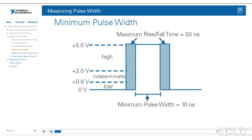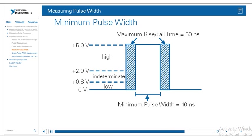When measuring pulse width, there's always a minimum pulse width that you must exceed in order to actually measure it. There is a minimum delay needed from the time a counter senses a rising or falling edge until it can sense another rising or falling edge — that delay is known as the minimum pulse width. The minimum pulse width depends on the counter chip used in your data acquisition device. For example, the minimum pulse width for both source and gate of a DAQ-STC chip is 10 nanoseconds. Specifications for the minimum pulse width can be found in the hardware manual for your data acquisition device.